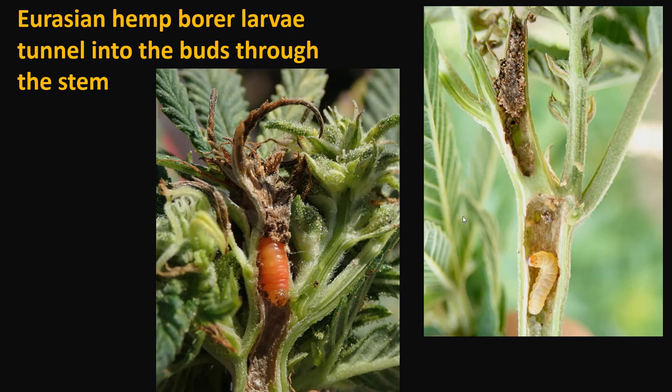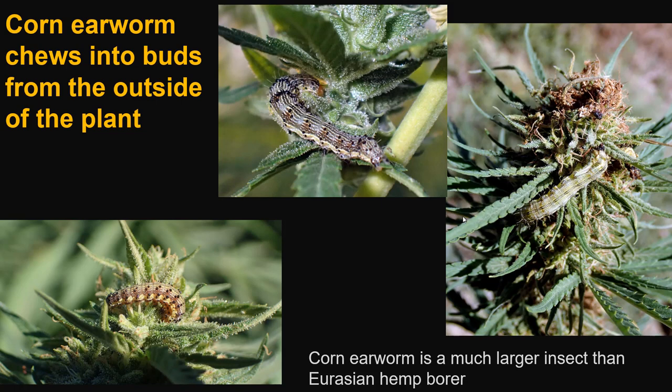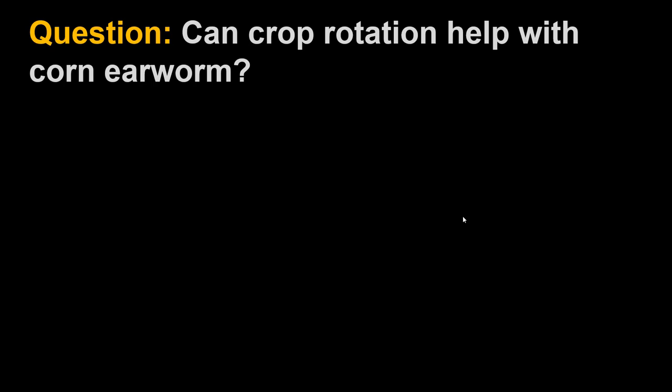The Eurasian hemp borer is normally a pale color; in the last larval stage it turns a pinkish color, but it is a very tiny caterpillar found within the stem — you're not going to see this out on the plant. Corn earworm, by contrast, attacks from the outside, chewing on the edge or boring in, then moving out and doing it again somewhere else.